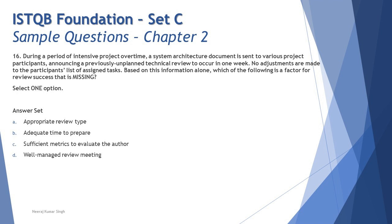Option A says appropriate review type — that's not the answer because the question specifies it is a technical review. We have four types of review: informal, walkthrough, technical, and inspection. The type is clearly stated, so A is not missing. Option B says adequate time to prepare — that could be a possibility, because the review is stated as previously unplanned. There is no mention of how much time participants get to go through the details before the review meeting. Adequate time to prepare is one of the success factors and certainly must be planned.